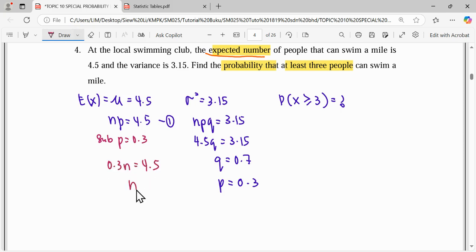Then I substitute back to find the sample, so n here we can get 15. So we can denote that our distribution now, X is the number of people that can swim a mile. X is distributed binomial, we have sample 15, p is 0.3.